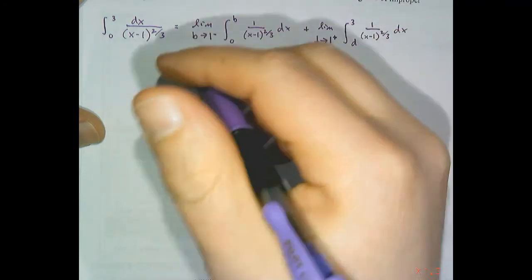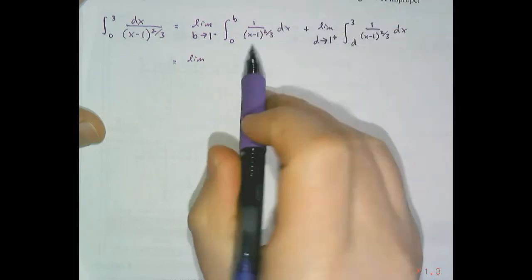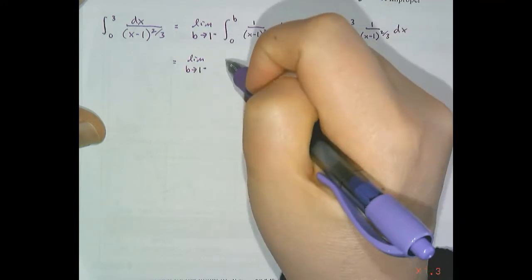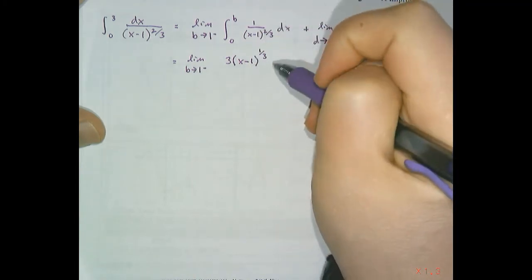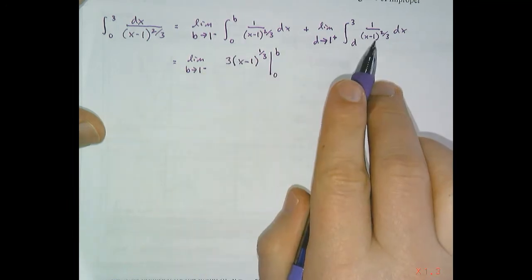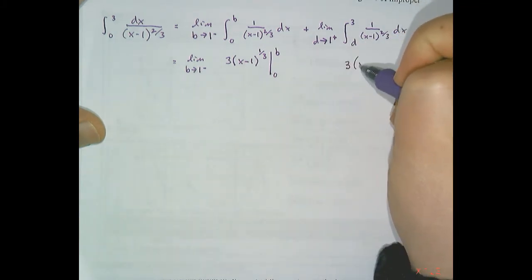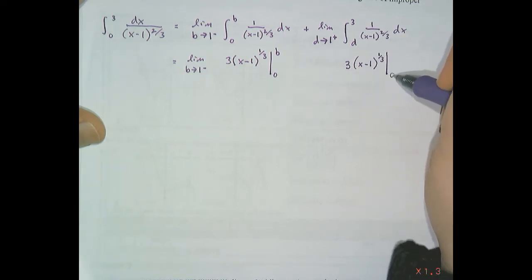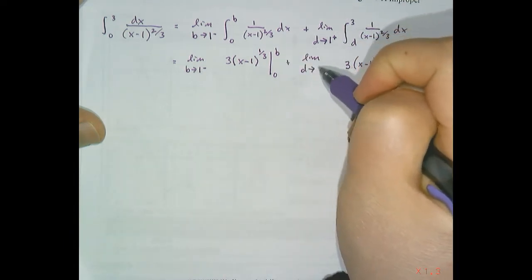Going through u-substitution and finding the antiderivative of one over (x minus one) to the two-thirds, we find the antiderivative is three times (x minus one) to the one-third, evaluated from 0 to b for the first part. The second antiderivative uses the same function — three times (x minus one) to the one-third — evaluated from d to 3, with the limit as d approaches one from the right.